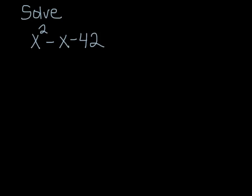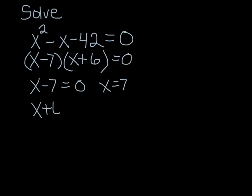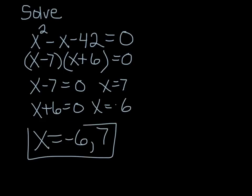If you were asked to solve x squared minus x minus 42 equals 0, you would need to factor it. Factors of negative 42 that add to get negative 1 would be negative 7 and positive 6. When solving, set each factor equal to zero: x minus 7 equals 0 gives x equals 7, and x plus 6 equals 0 gives x equals negative 6. So x equals negative 6 and 7.